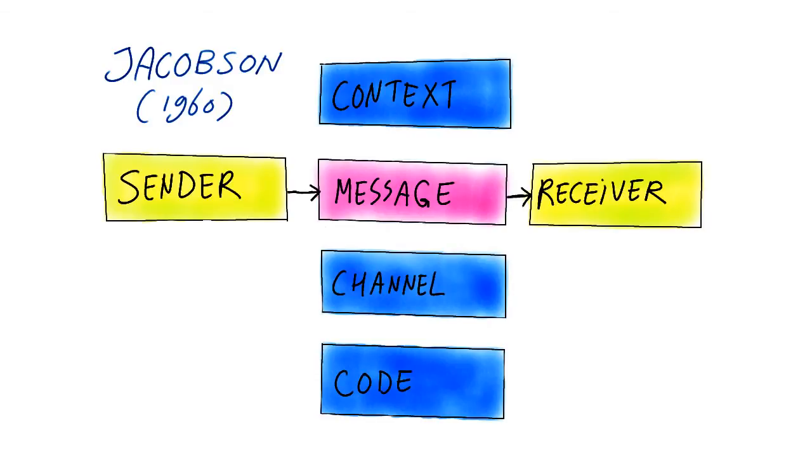Successful communication, according to Jacobson, can only exist when all of these elements are in place. Also, each act of communication has one dominant function that relates to one of these elements in this model.